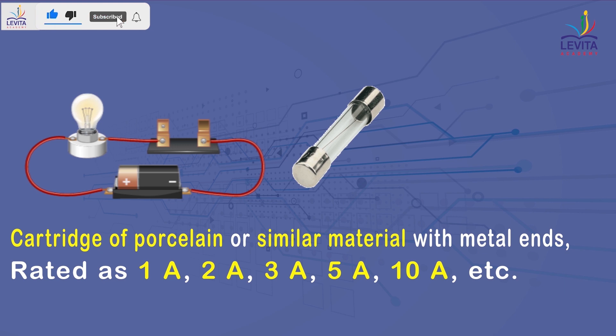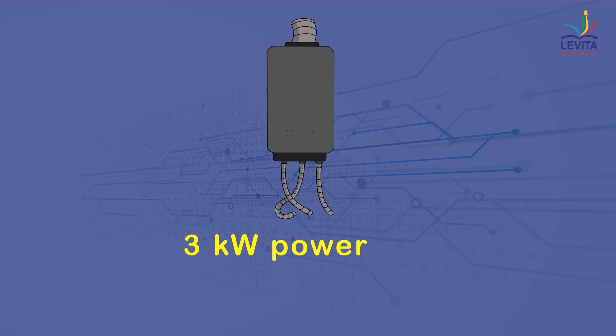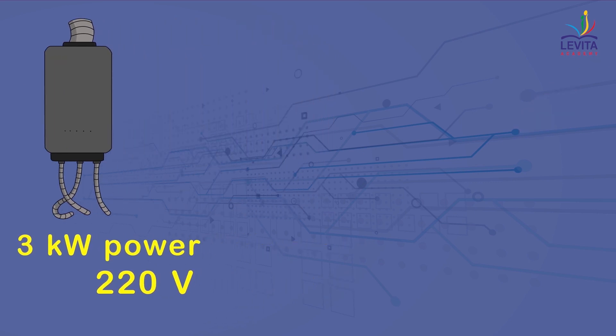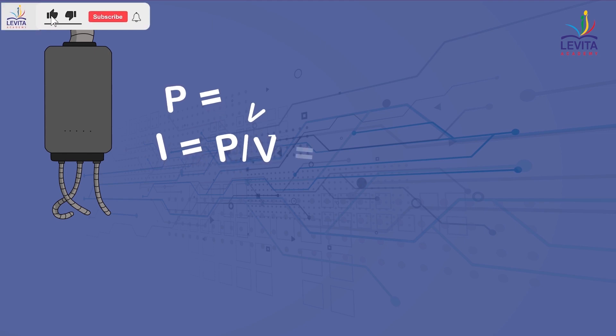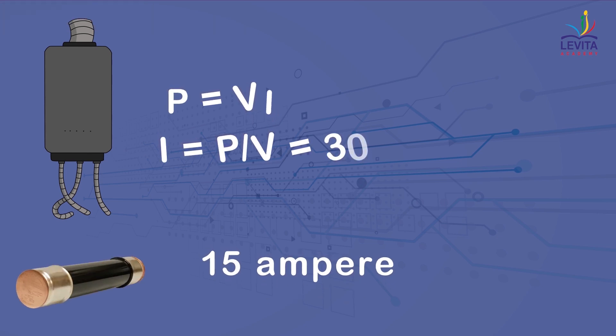For example, if a water heater consumes 3kW power when operated at 220V, then which fuse need to be used? In such case, we first need to find the current required for the functioning of the heater that is P = VI or I = P/V that is equal to 3000/220 that implies 13.64A. So, in this case, a 15A fuse must be used.